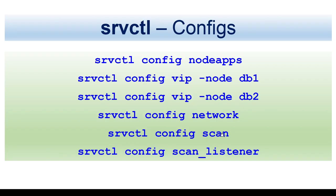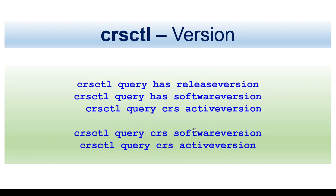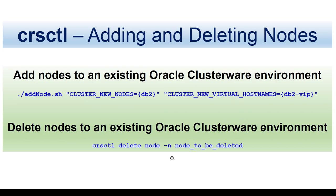To verify connectivity across the nodes, you can use CLUFFY comp nodeconnection -n all across all the nodes in verbose mode. To get information about all nodes, use OLS nodes. For local node information, use OLS nodes -l. To get the cluster name, use OLS nodes -c. For the HAS release version, software version, and for CRS active version and software version, you can use those options to find your current release, software, and active versions. To add a cluster node, use addnode.sh; to delete, use CRSCTL delete.